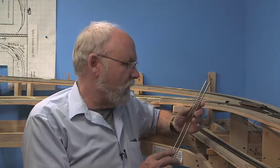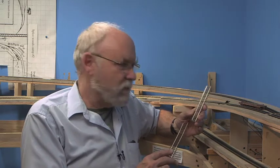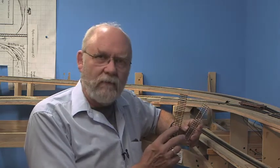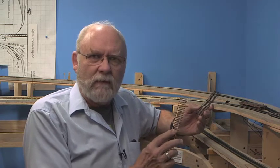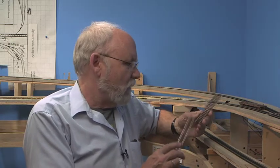In my case, we use code 70 for most of the main lines, switches, and such, and then code 55 for the sidings, smaller branch type track and so on. That means we've got to join code 70 to code 55, which is a little bit of a trick but not bad.